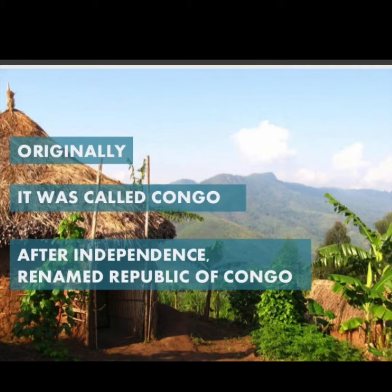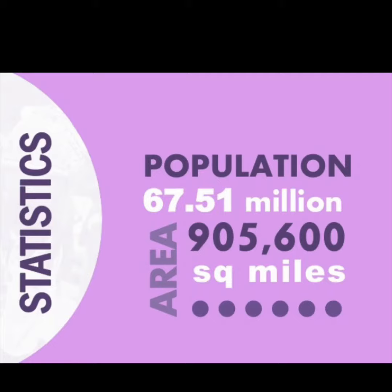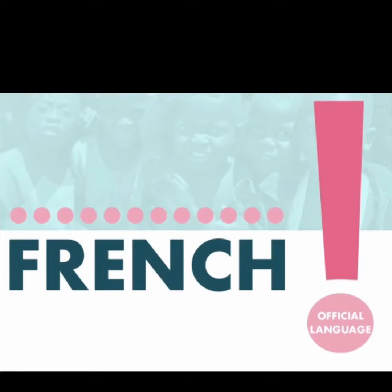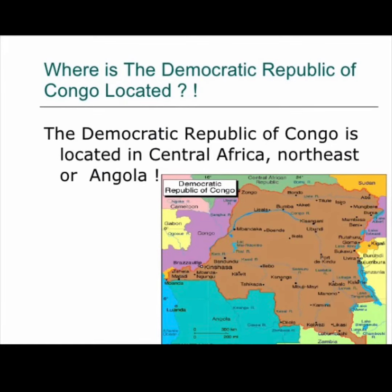It was later named the Democratic Republic of Congo. It has a population of 67.51 million, whereas the area is about 905,600 square miles. French is the official language of this country.